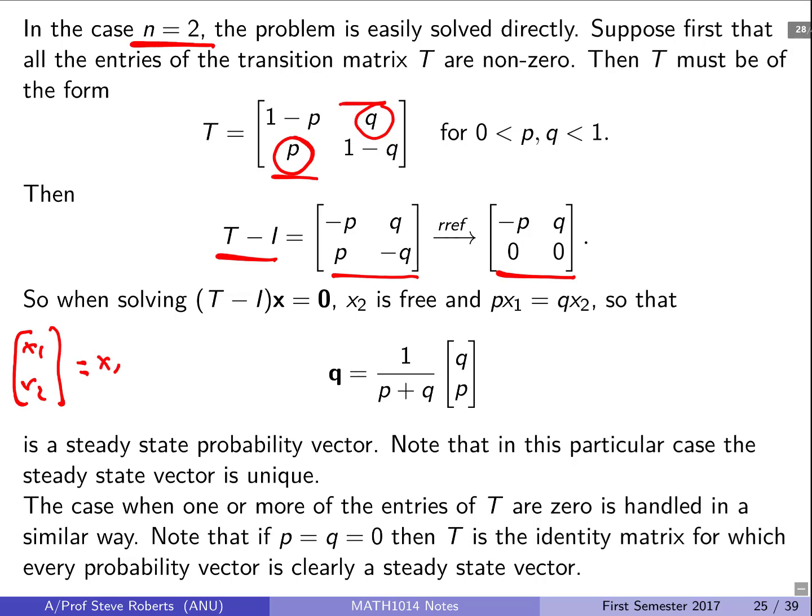It's going to be equal to the free variable times, well it's going to be minus, it's going to be Q, Q on P, one. Now it's a bit annoying having this division, so we can write that out as X2 on P times QP. And this term, the X2 on P, is arbitrary. So it's an arbitrary constant, so we can actually get rid of that division and just call that, say, a new free variable, X2 prime, for instance. Alright, so that's our general solution.